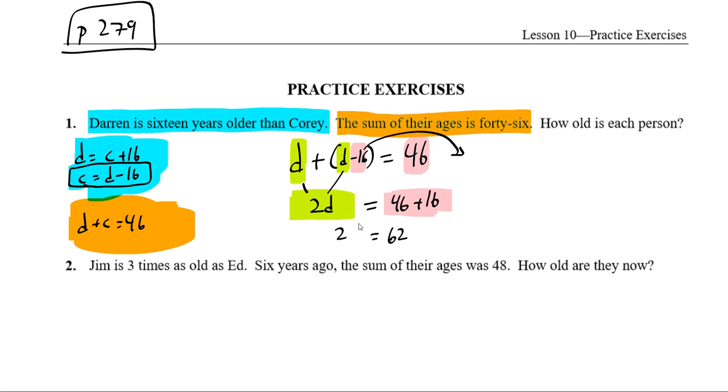46 plus 16 is 62. Now I have 2D equals 62. I know what to do here. My variable is not alone, but only one thing is happening to it. It's only being multiplied by 2. So if I divide it by 2, I have to do that to both sides to keep it equal, to keep it fair. Then I can find that D is equal to 62 over 2, which is 31.